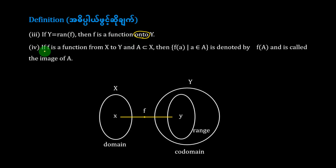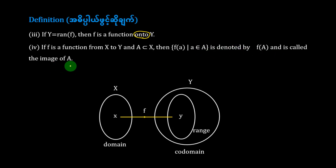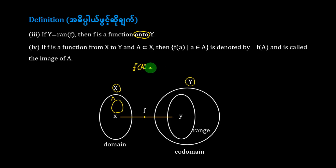Number 4, channel — if f is a function from h to y, and a is a subset of h, then the set of alpha of a, where a belongs to capital A, is denoted by alpha(A) and is called the image of A. This function is based on h to y and is created by alpha(A).